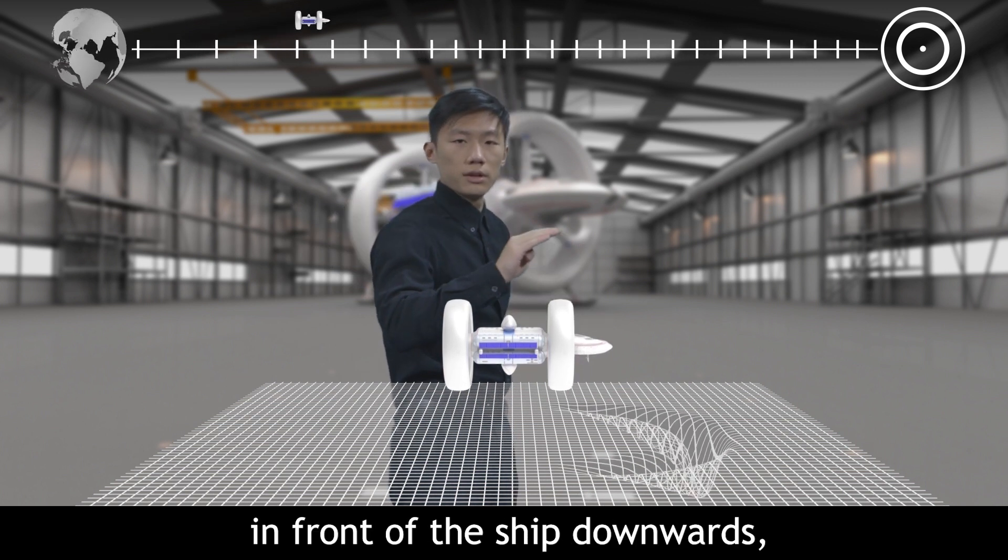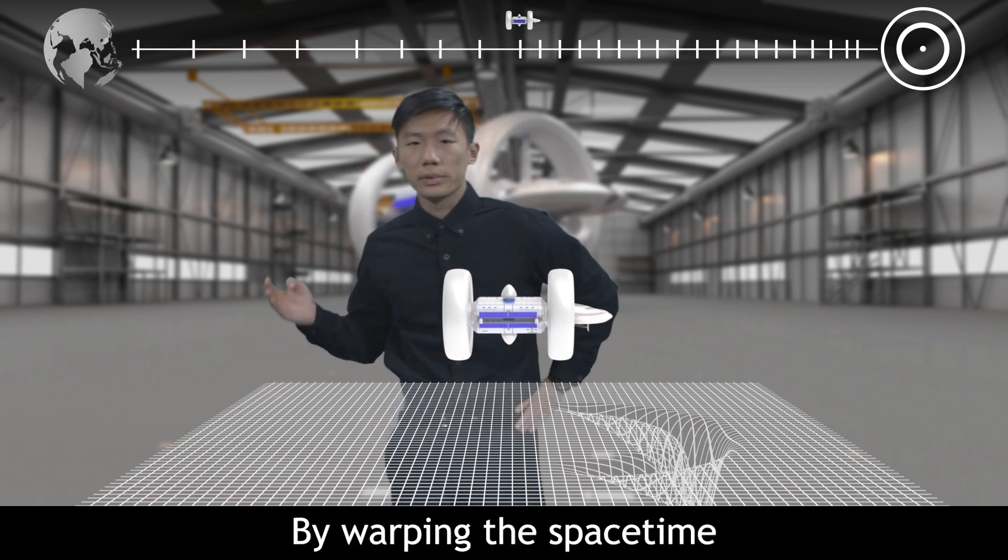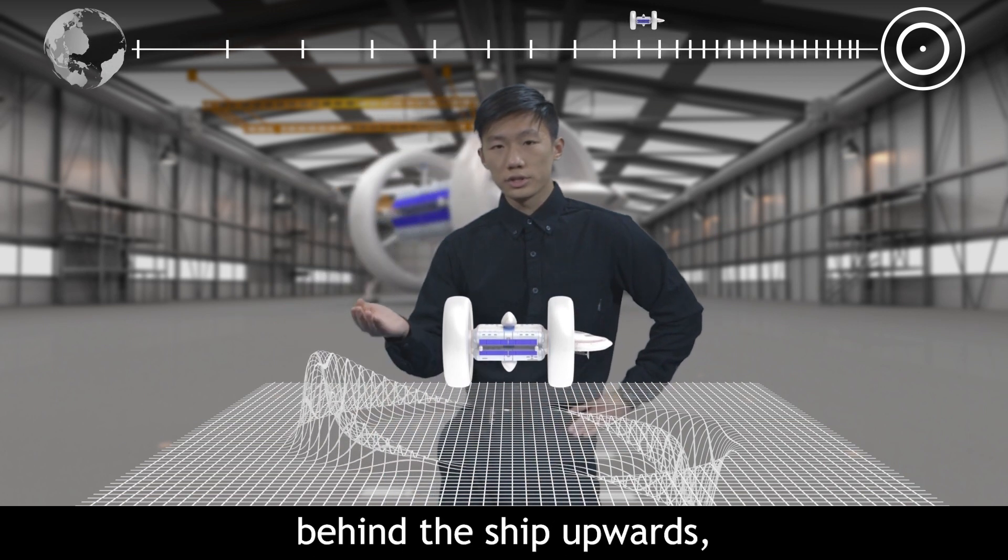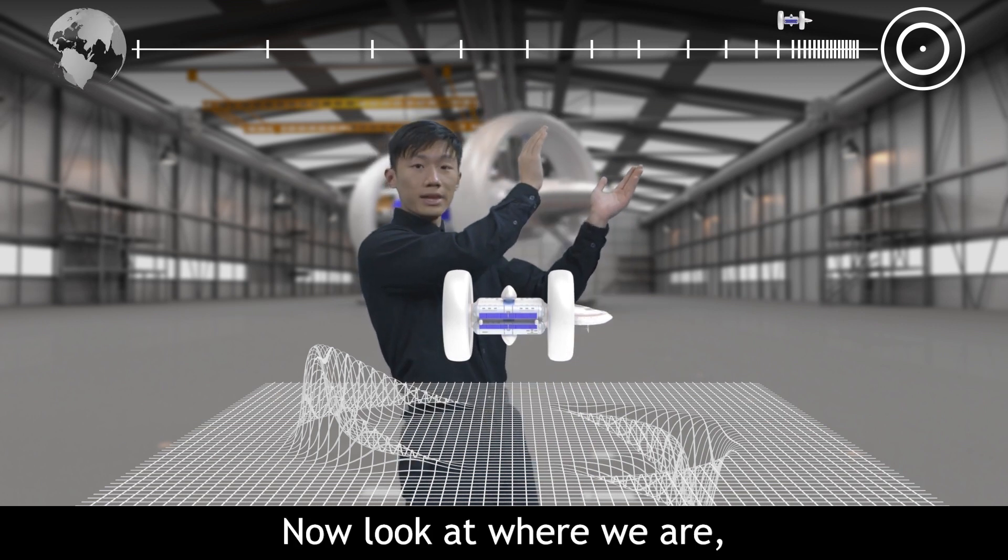By warping the spacetime in front of the ship downwards, we can compress the distance in front of us. By warping the spacetime behind our ship upwards, we can expand the distance behind us. Now, look where we are. Haven't we already arrived?